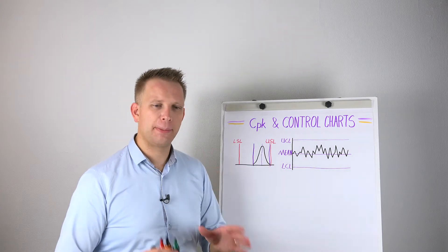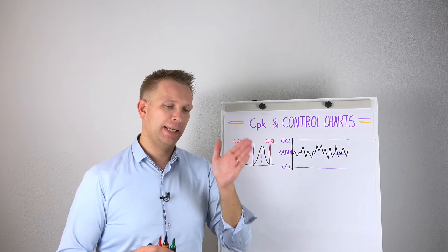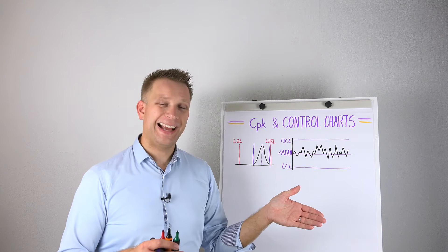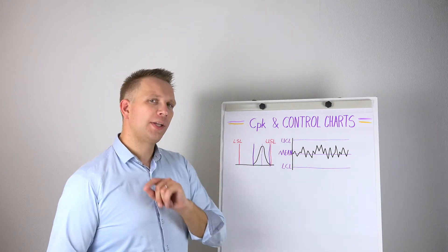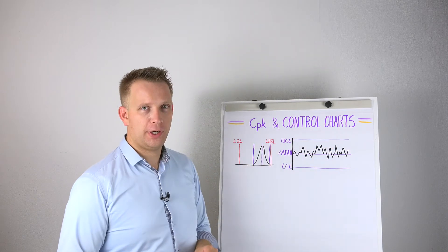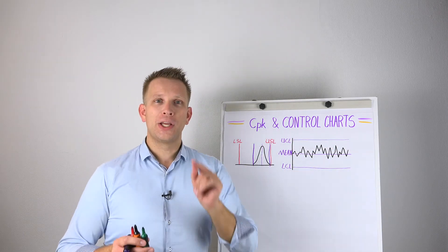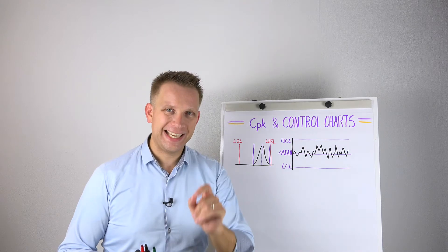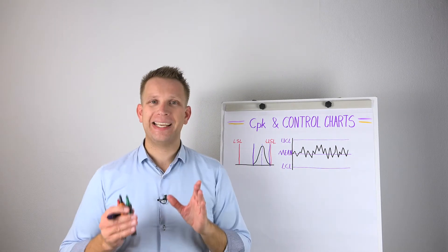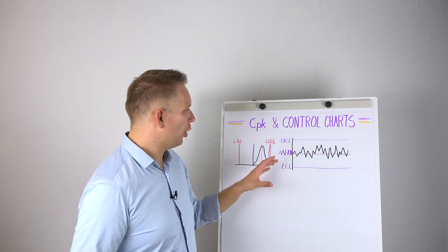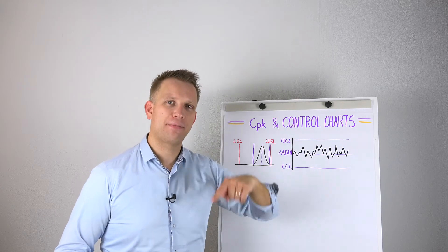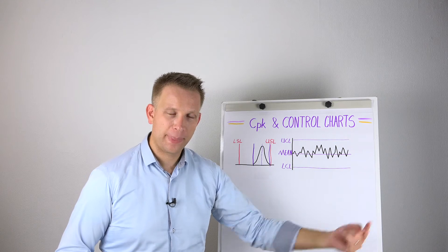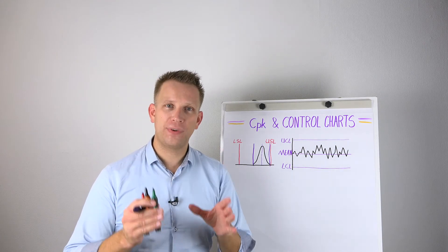There may be some tolerances in there, but in the end what it is doing is dumping packages out of the line when they are too light. When you want to do a control chart on the weight, you need to take those rejected packages into account. You cannot do proper control charting on only those products that have survived the check weigher.